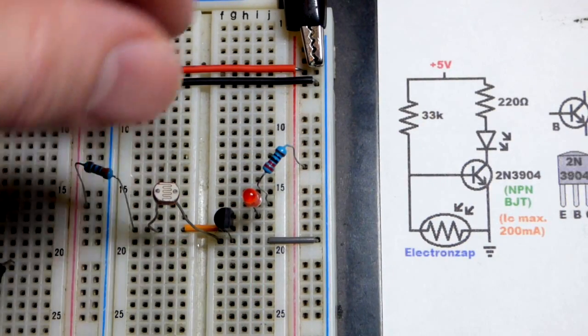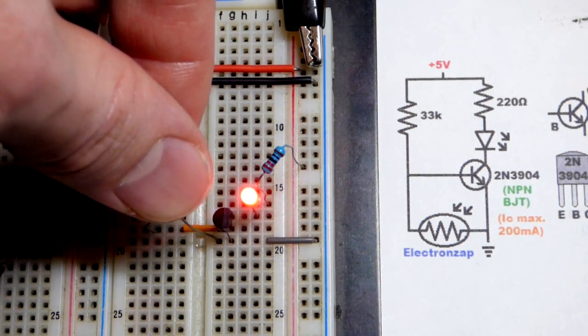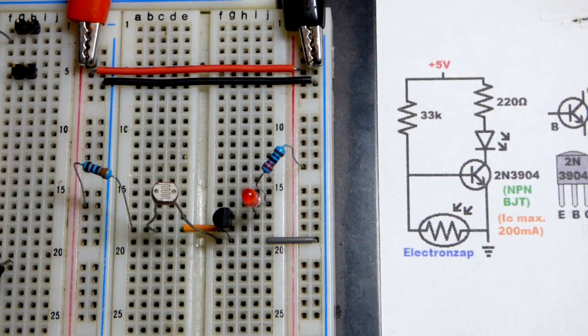So now in this video we can look at how an NPN bipolar junction transistor can be wired as a night light. There you can see when it gets dark, the light turns on.